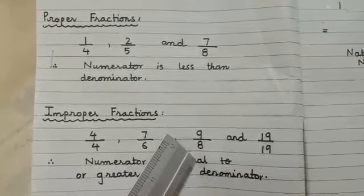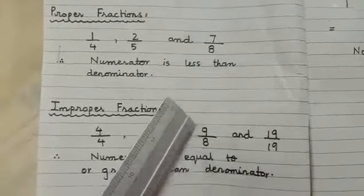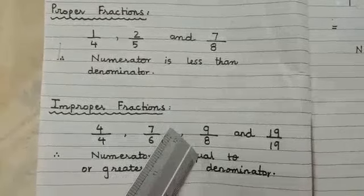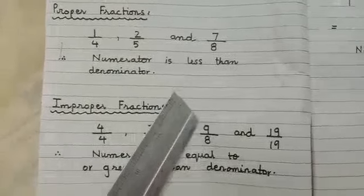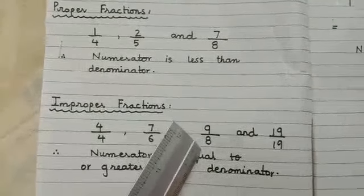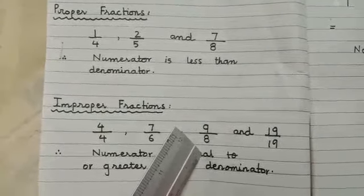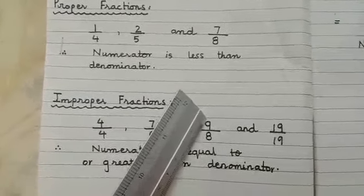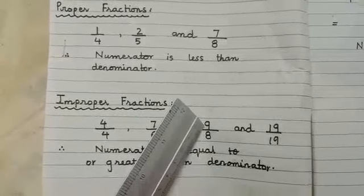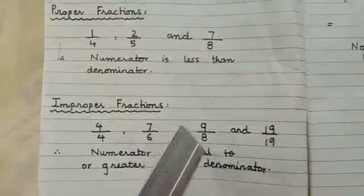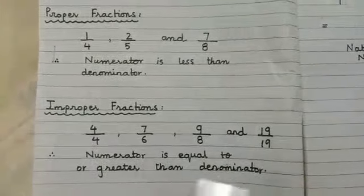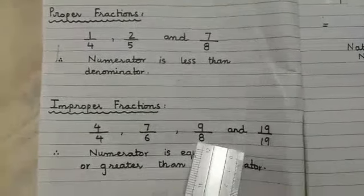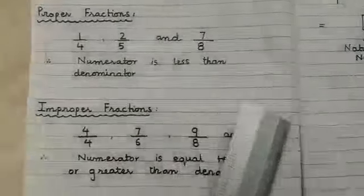Next example: 9 by 8. 9 is greater than 8. 9 is at the position of numerator and 8 is at the position of denominator. The numerator is greater than the denominator, so it satisfies this condition. That is why this is an improper fraction.